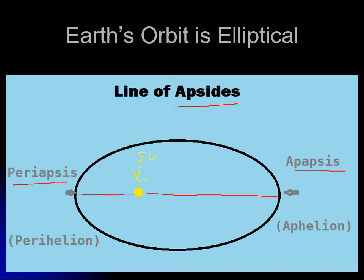When the planet is at perihelion, that's closest to the sun. Periapsis is the closest to the thing you're going around — 'helios' is Greek for sun — so perihelion is the closest to the sun, and aphelion is the farthest from the sun. You can look at a table of the Earth's orbit and it will tell you when we're at perihelion and aphelion.